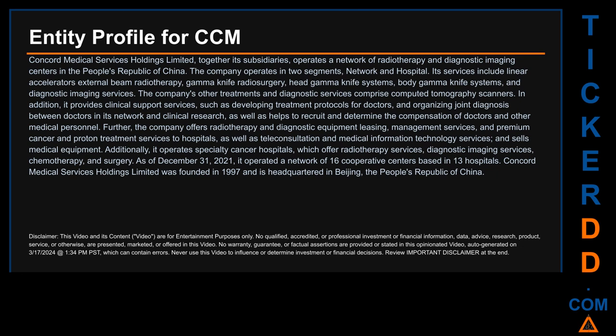The company operates in two segments: network and hospital. Its services include linear accelerators, external beam radiotherapy, gamma knife radiosurgery, head gamma knife systems, body gamma knife systems, and diagnostic imaging services. The company's other treatments and diagnostic services comprise computed tomography scanners. In addition, it provides clinical support services such as developing treatment protocols for doctors and organizing joint diagnosis between doctors in its network and clinical research, as well as helping to recruit and determine the compensation of doctors and other medical personnel.